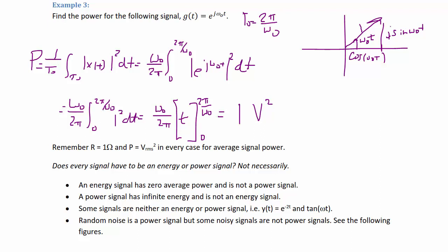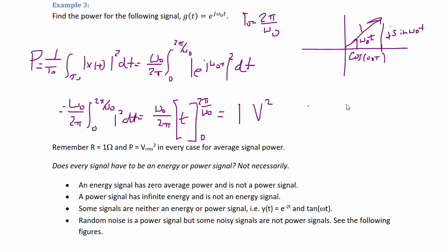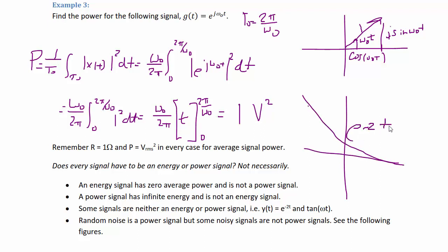Some signals that are neither an energy nor a power signal would be, for example, e^(−2t), because if you sketch e^(−2t) it has a value for all time, which means when you integrate it from negative infinity to infinity you won't get a finite value. Tangent(ωt) is another example.